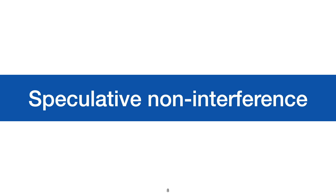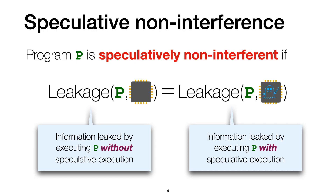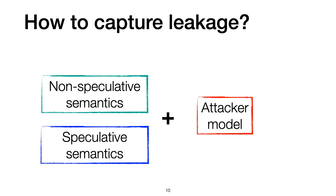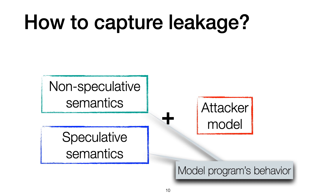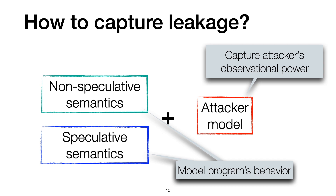In the rest of the talk, I will present a principled approach for reasoning about this kind of leaks. The foundation of our approach is speculative non-interference, a novel notion of security against speculative execution attacks. In a nutshell, a program is speculatively non-interferent if it does not leak more information when being executed with speculative execution than without it. Our framework consists of three main components: two semantics and an attacker model. The two semantics — a non-speculative one and the speculative one — model the program's behavior with and without speculative execution, while the attacker model formalizes the attacker's observational power.